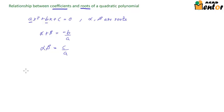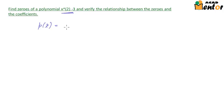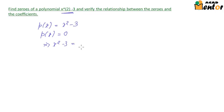Let's consider an example. The problem states: find the zeros of the polynomial x² - 3, and thereafter verify the relationship between zeros and the coefficients. Let's suppose this polynomial is P(x) = x² - 3. To find the roots we equate P(x) = 0, so this becomes x² - 3 = 0.